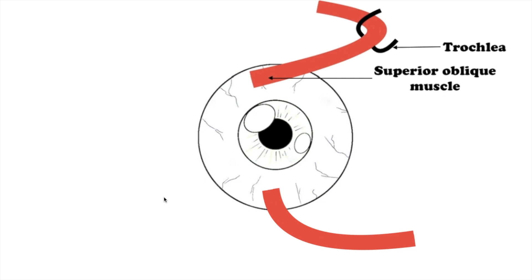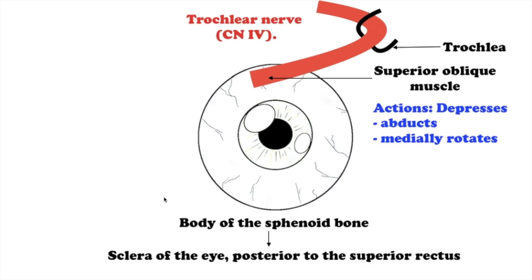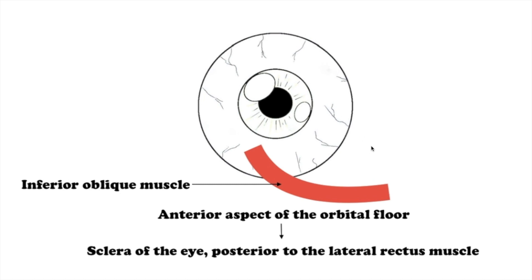The first oblique muscle is the superior oblique muscle, which originates from the body of the sphenoid bone. Its tendon passes through a trochlea and then attaches to the sclera of the eye, posterior to the superior rectus. This muscle depresses, abducts, and medially rotates the eyeball. It is innervated by the trochlear nerve.